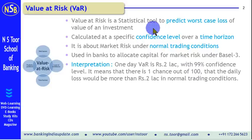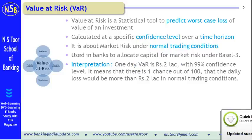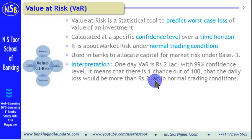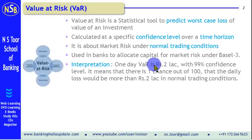How is it interpreted? Let us see this example. One day Value at Risk is Rs. 2 lakh with a 99% confidence level. It means there is one chance out of 100 that the daily loss will be more than Rs. 2 lakh in normal trading conditions. This means out of 100 chances, in 99 cases the daily loss will not exceed Rs. 2 lakh, but there is one chance when the daily loss can exceed Rs. 2 lakh. That is how Value at Risk is interpreted.